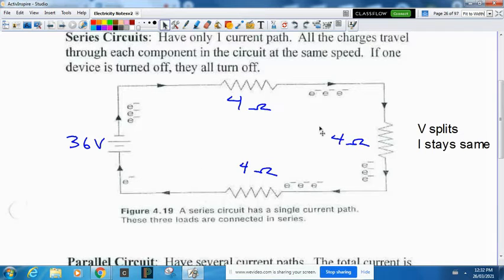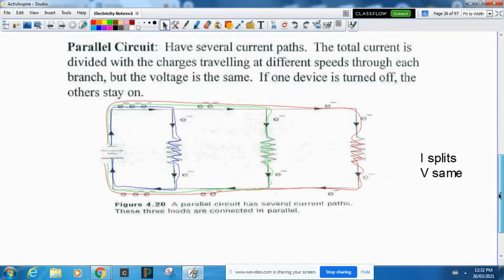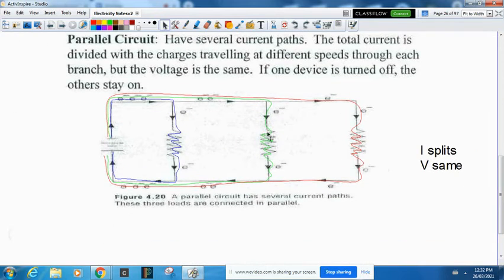In parallel, as you add more bulbs, they stay bright but the battery doesn't last as long. In series, as you add more bulbs they become dimmer, but the battery lasts longer.